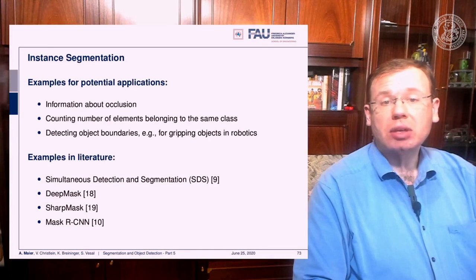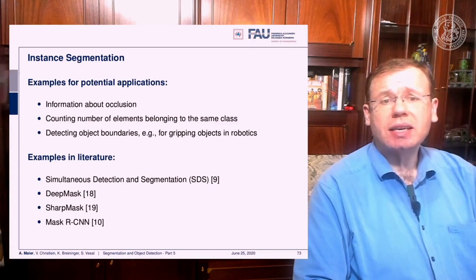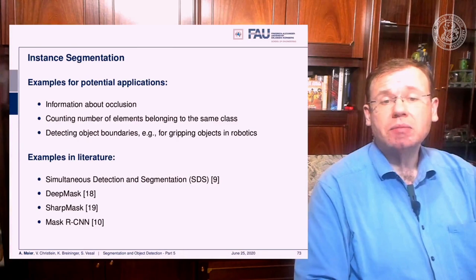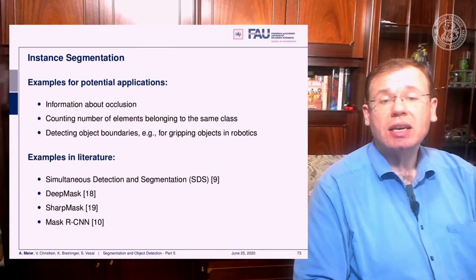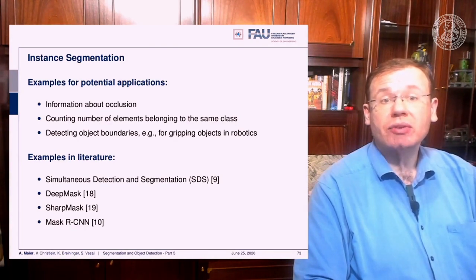Examples for potential applications are information about occlusion, counting the number of elements belonging to the same class, detecting object boundaries — for example, of gripping objects in robotics. This is very important. There are examples in the literature: simultaneous detection and segmentation, DeepMask, SharpMask, and Mask RCNN in reference 10.